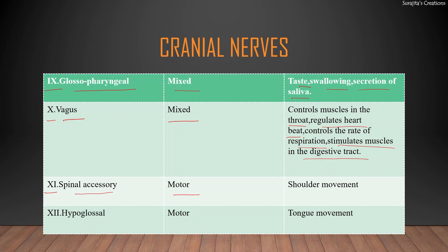The vagus nerve also stimulates the muscles of the shoulder, helping in shoulder movement. The twelfth cranial nerve is the hypoglossal nerve; it is a motor nerve that stimulates the muscles of the tongue, so it is responsible for tongue movement.